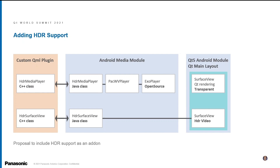Now let's look at how we can add HDR support in Qt. We have a use case where we need to display a media player control overlay on top of the video, which means we need to put the Qt rendering surface on top of the video and make it transparent. Next, we need to add a new Android media module with an HDR player class that has an instance of ExoPlayer. Lastly, we need to create a custom QML plugin to control our HDR media player. This design adds HDR support as an add-on so that the Qt Multimedia module continues to work for non-HDR video. In our original prototype we changed the multimedia module backend to use SurfaceView directly — we had more code reuse, but it would break our existing applications that do not need HDR support.